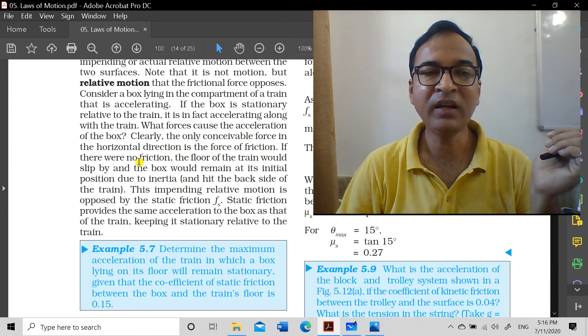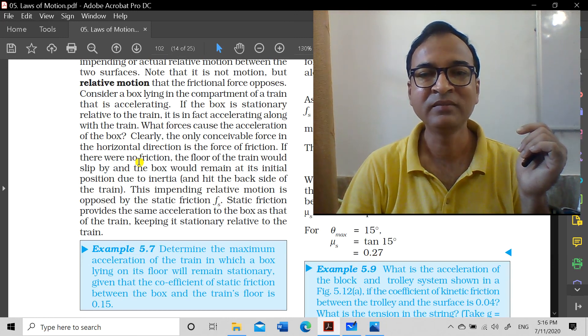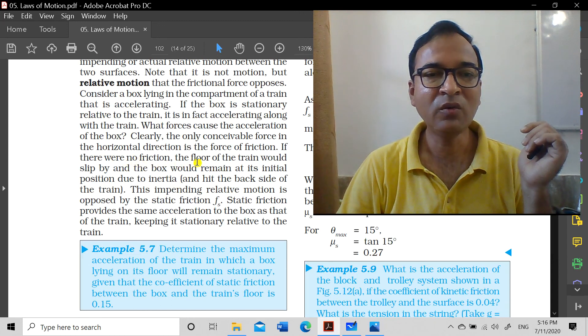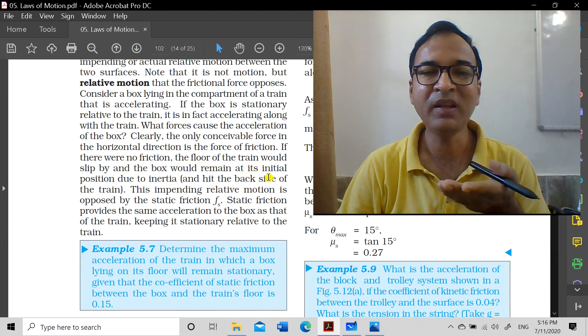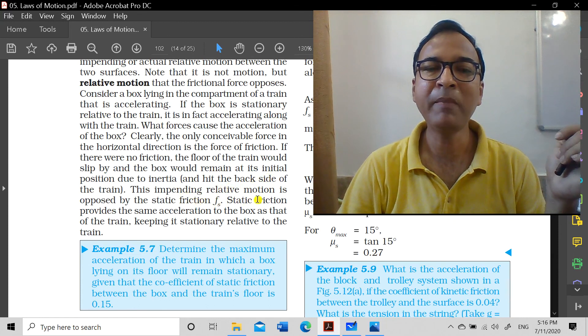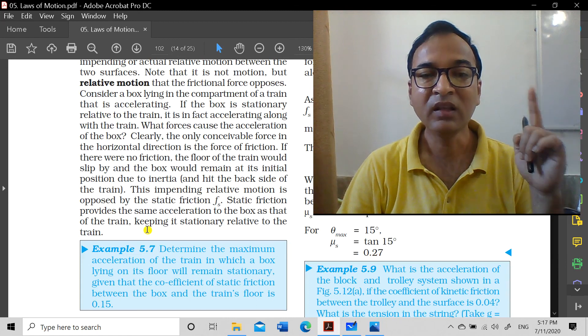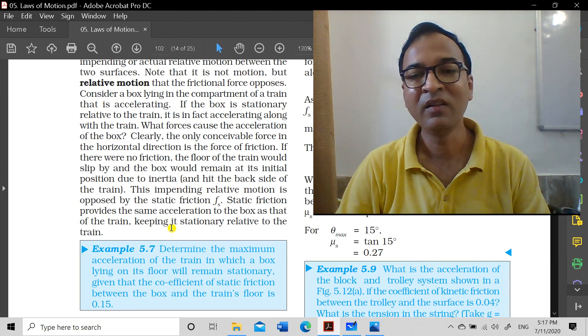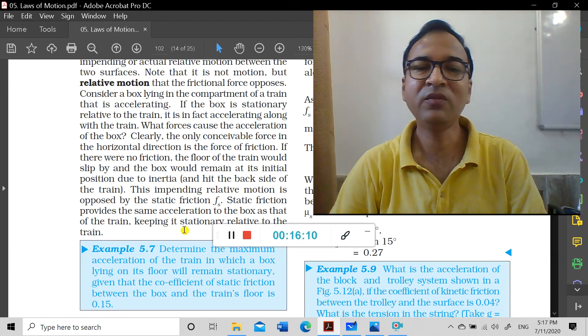If there's no relative motion, friction is pulling it along - friction is working to carry it forward. Think from this point of view: if there were no friction, the floor of the train would slip by and the box would remain at its initial position due to inertia and hit the back side of the train. This impending relative motion is opposed by the static friction fs. The static friction provides the same acceleration to the box as that of the train, keeping it stationary relative to the train. This is an important factor. The remaining part of friction will be covered in the next video.